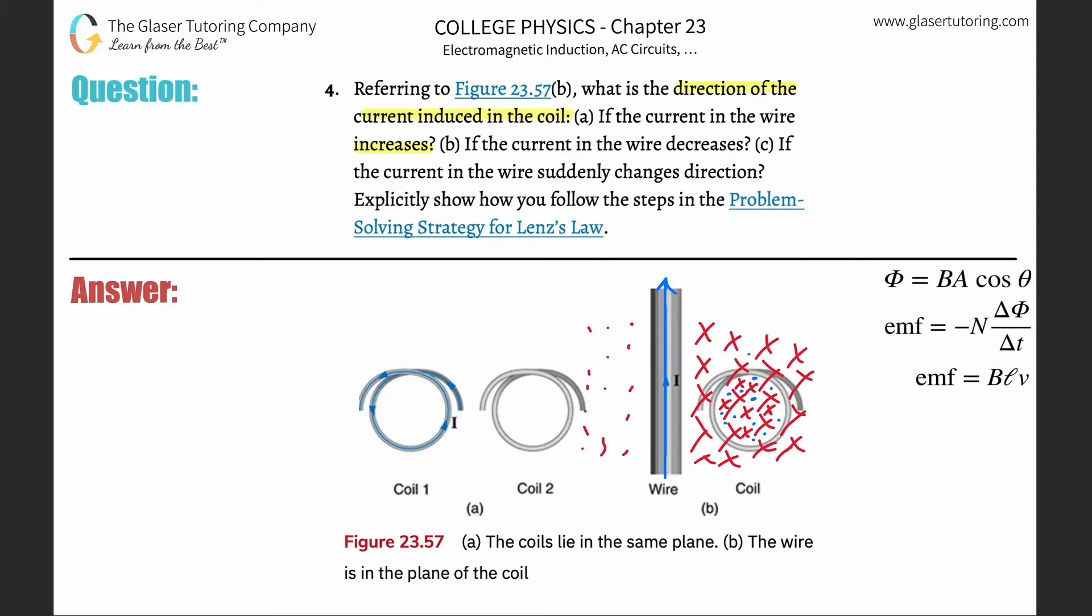And the only way for that to happen is if, should the current rotate clockwise or counterclockwise? Apply right-hand rule number two. I'll let you think about it. If it goes counterclockwise, you can put your thumbnail pointing to the left, your fingers will curl around this, they'll curl into the page here, and then they'll come out of the page inside the loop. So it should go in a counterclockwise direction.